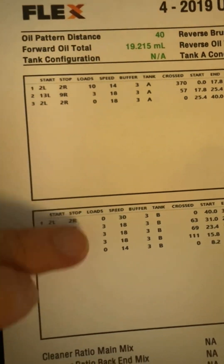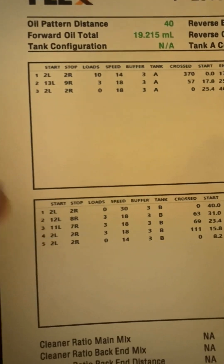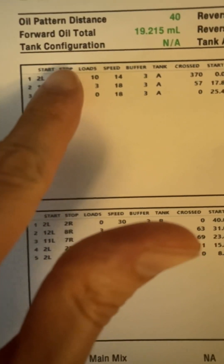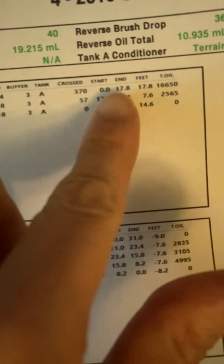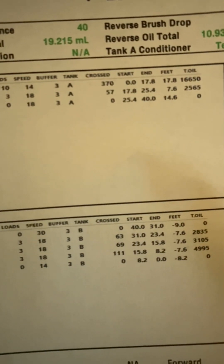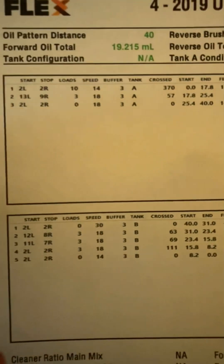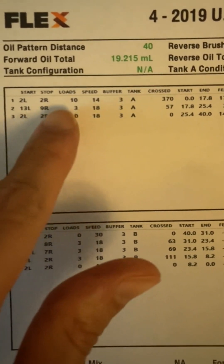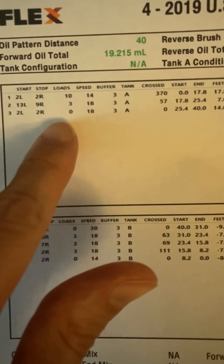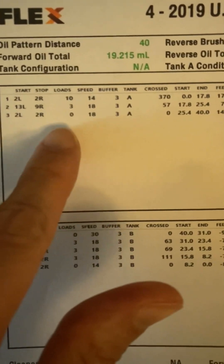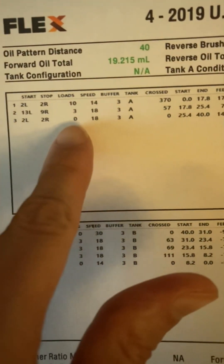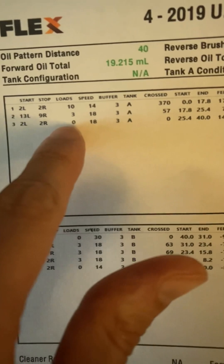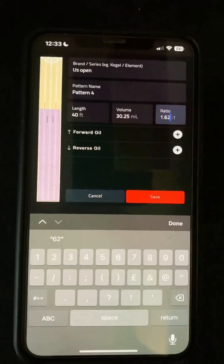The sections we're going to be interested in are here and here — this is the forward and the reverse oil — and we're going to mainly be looking at the start and stop columns here, and the start, end and feet columns over on the other side. We're also going to be briefly interested in the loads column here, because we're just showing the pattern visually, we don't need to worry about any of these that have a zero.